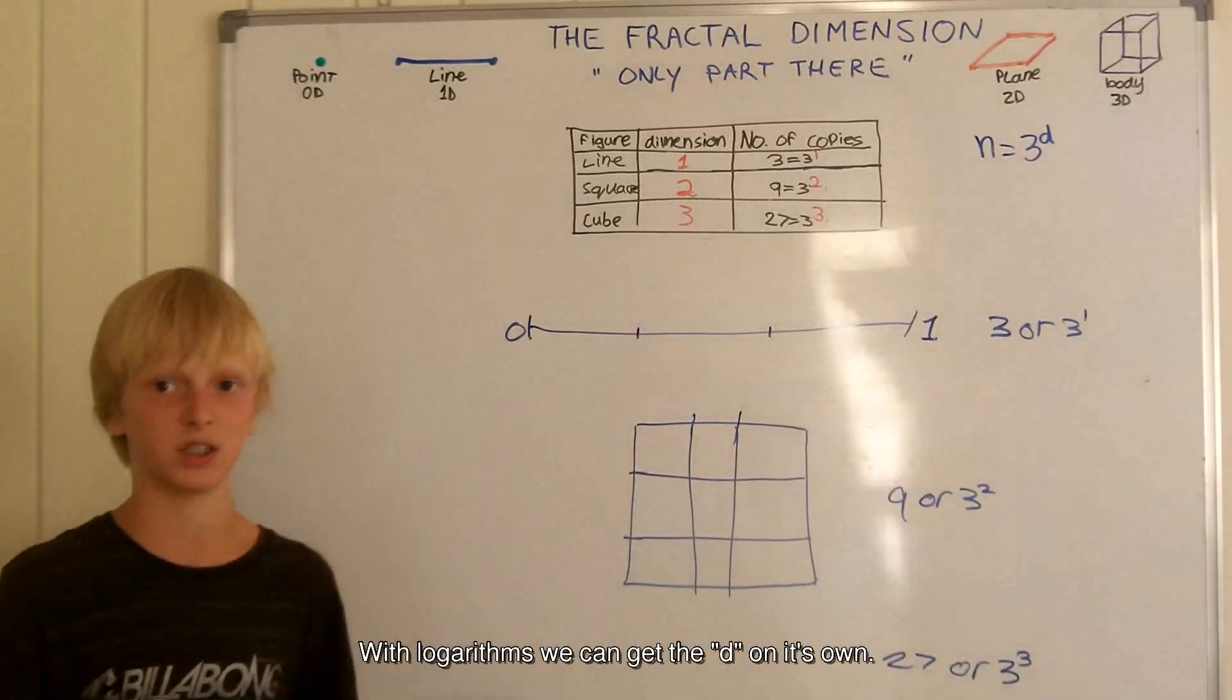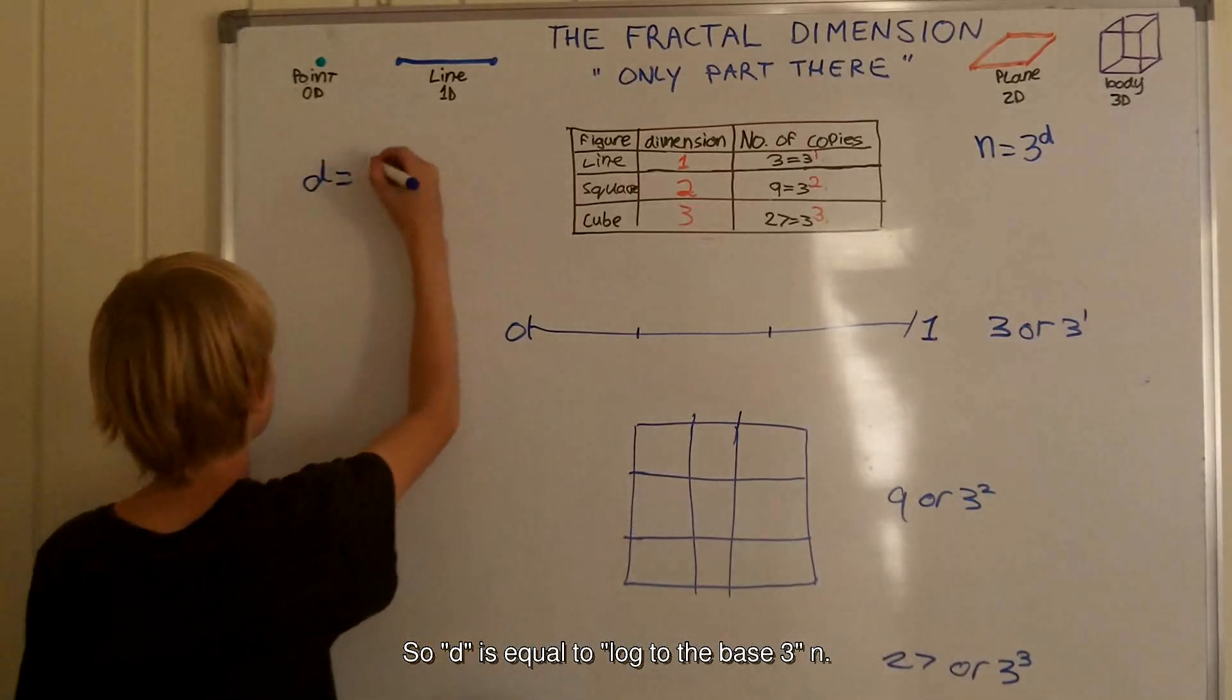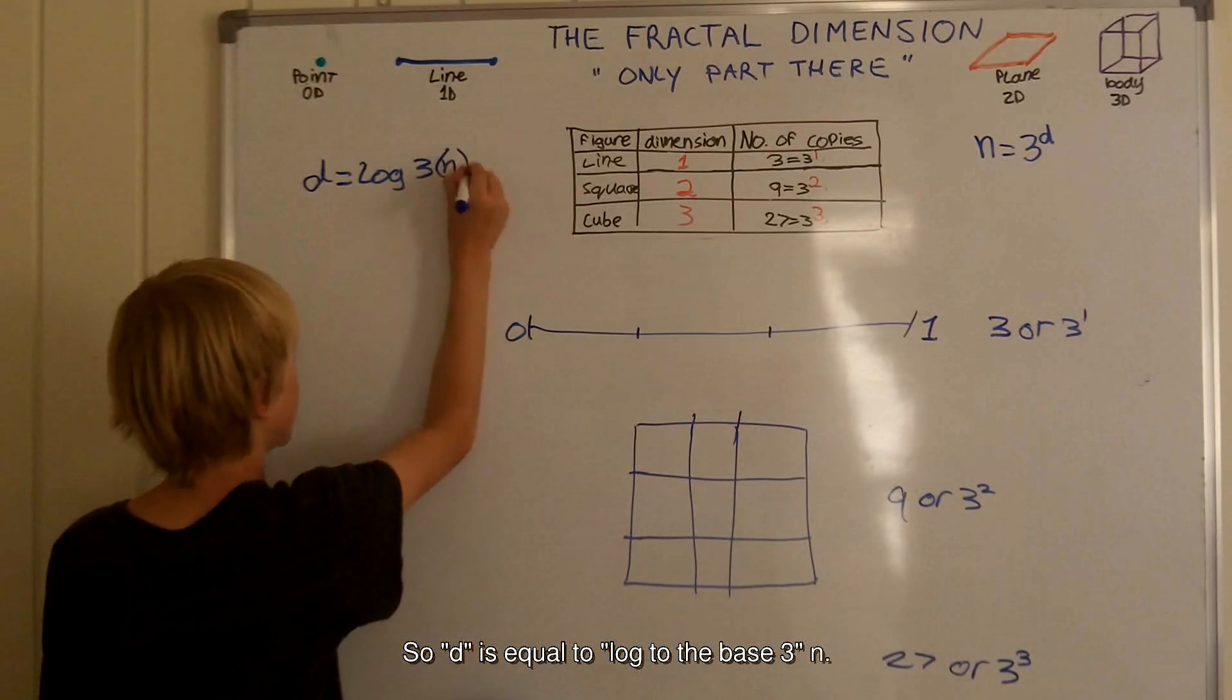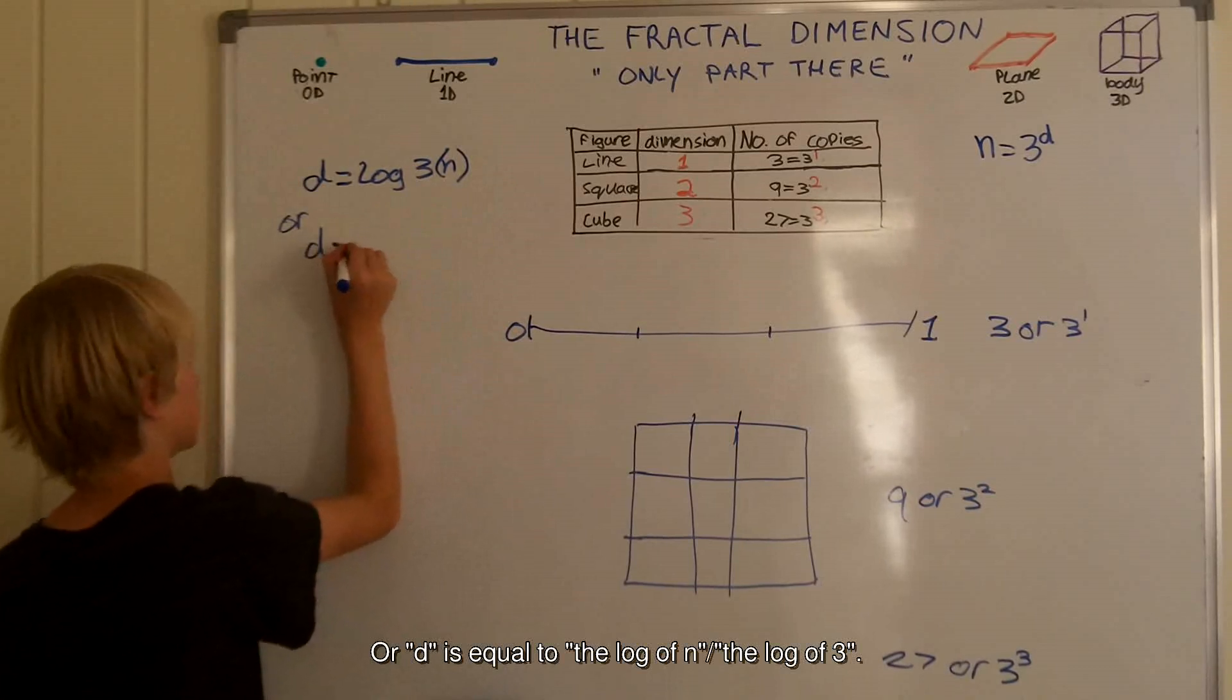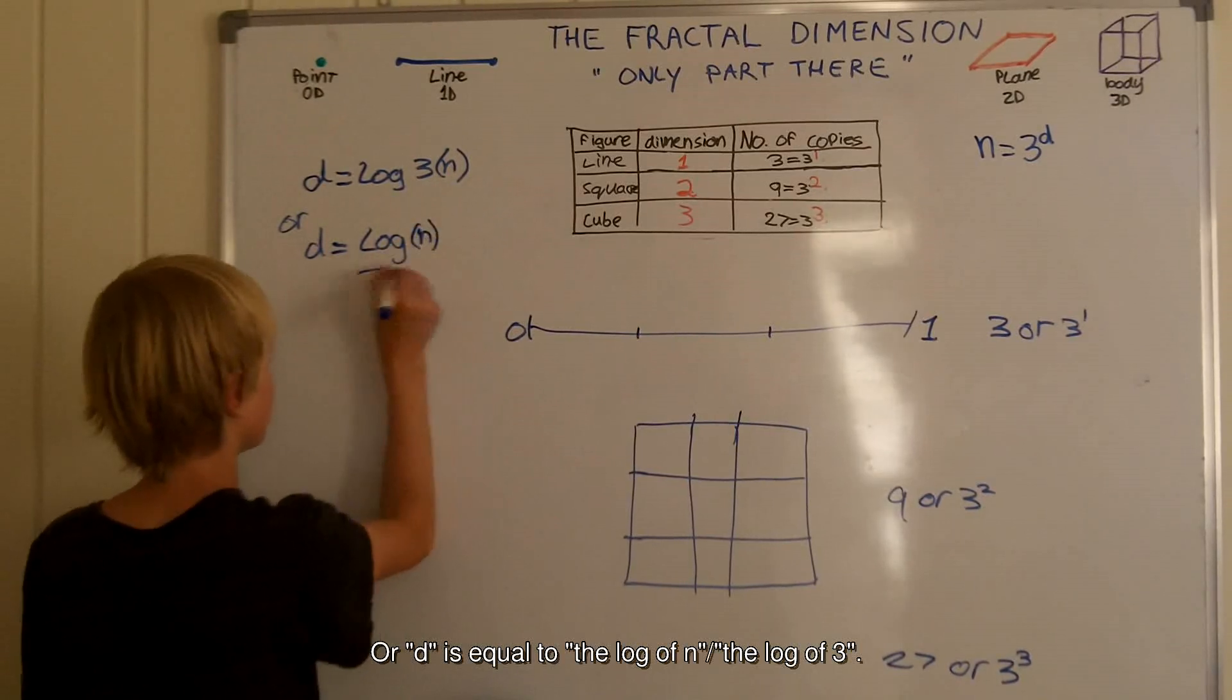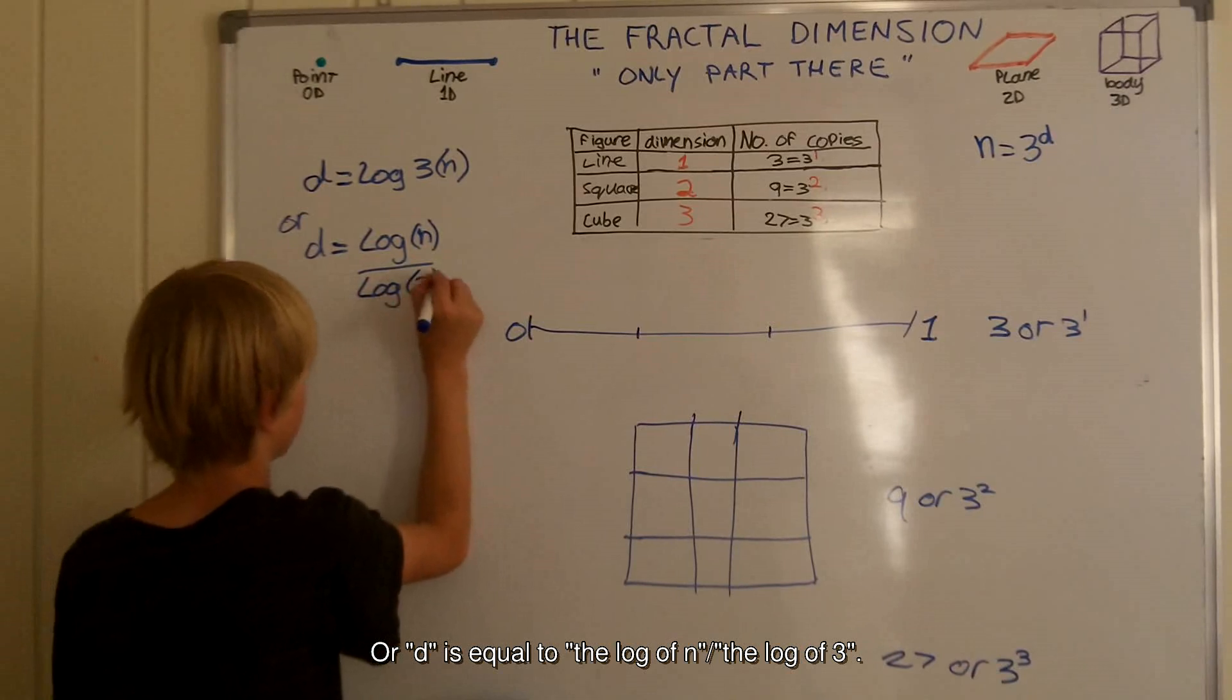With logarithms, we can get the d on its own. So d is equal to log of 3, n, or d is equal to log of n divided by the log of 3.